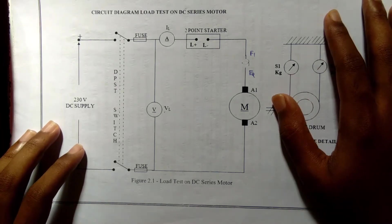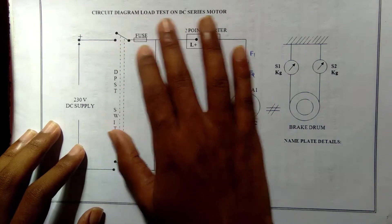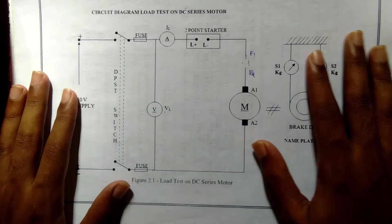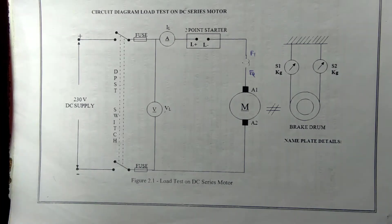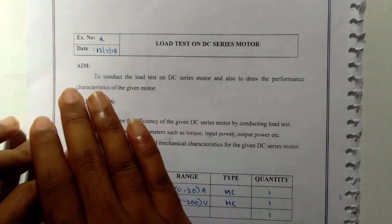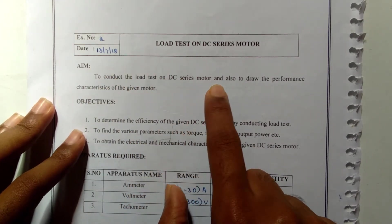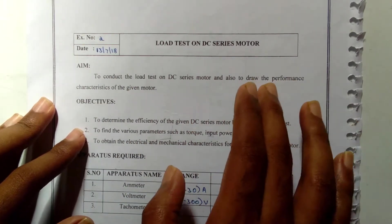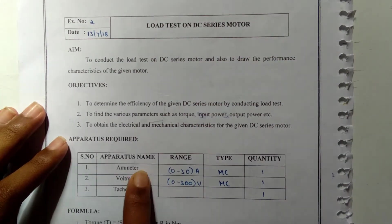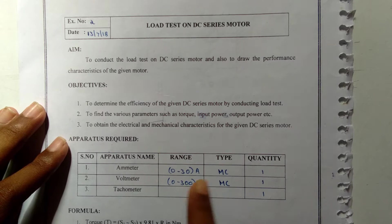Hi guys, in this experiment we're going to see about a load test on DC series motor. This is the circuit diagram of this experiment. The aim of the experiment is to conduct load test on DC series motor and also to draw the performance characteristics of the given motor. Apparatus required will be ammeter, voltmeter, and tachometer in the corresponding range.